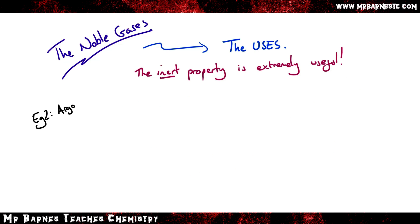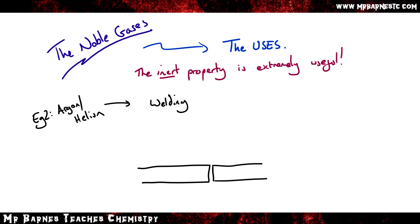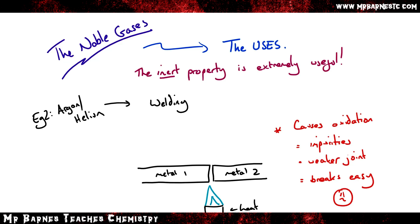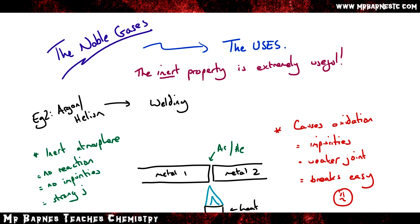Moving on to another example, argon and helium are used in welding. If you take two metals and heat them together to join them, and oxygen is present, it causes oxidation. If the metal oxidizes, there will be impurities and it makes the joint weaker, meaning it will break more easily. So if you replace that oxygen with argon or helium, it gives an inert atmosphere — no reactions, no impurities — and it gives you a stronger joint. This is all down to the noble gas having a full outer shell.